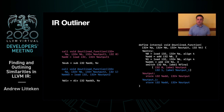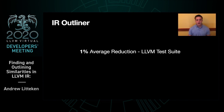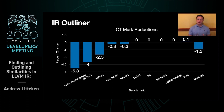More detailed implementation details can be found on the mailing list and this is currently in review. With our initial implementation of the IR outliner, we get 1% reduction on average of the LLVM test suite, with gains of up to 60% in certain microbenchmarks and 1.3% reduction in CT mark. Looking at CT mark a little bit closer, we can see that we get up to a 5% reduction in consumer typeset, with a few reductions due to underestimates of the number of needed instructions with our current cost model.